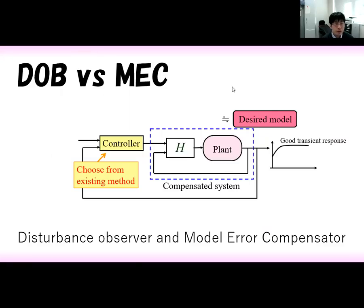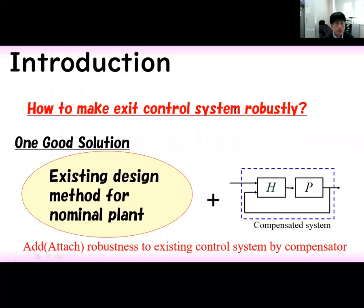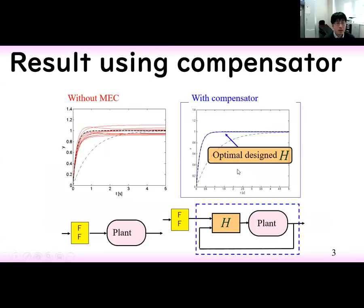I would like to introduce Disturbance Observer versus Model Error Compensator. In this presentation, I introduce how to make an existing control system robust by using MEC and Disturbance Observer. One good solution is to add an existing design method for a nominal plant with a compensated system, adding robustness to the existing control system using a compensator. By using the compensator, the perturbation and the effect of disturbance can be reduced.